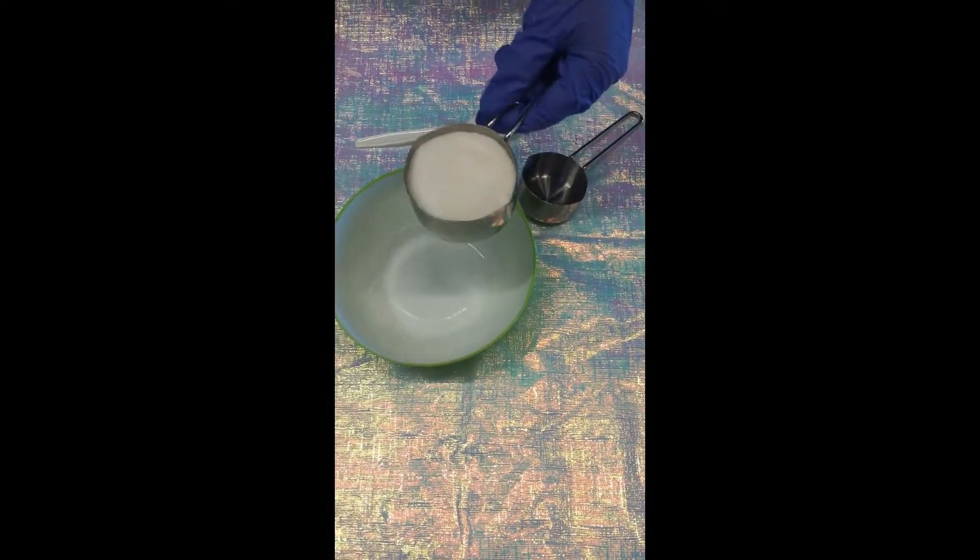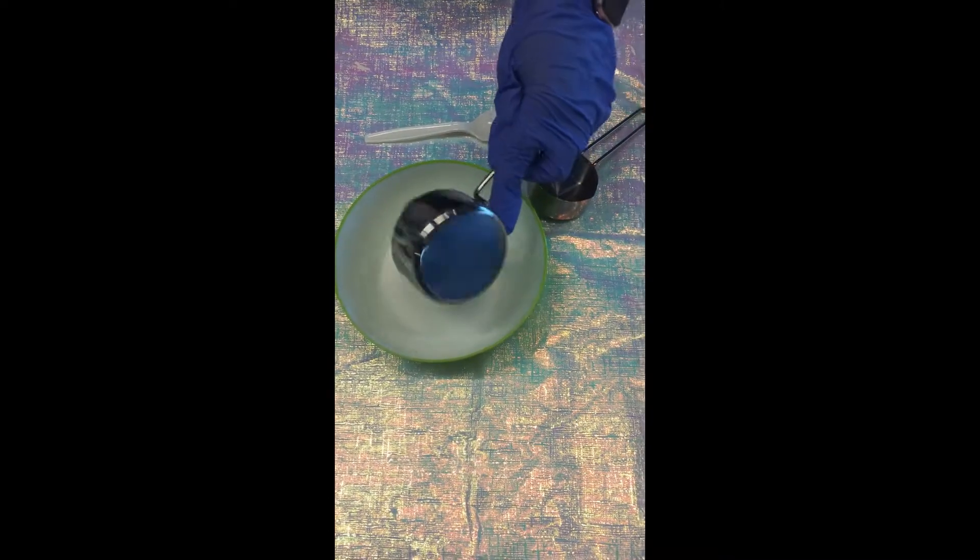First we're going to be taking a half a cup of granulated sugar and we're going to pour that into our bowl.